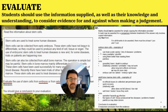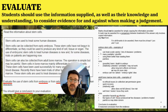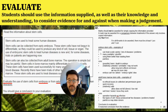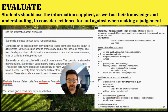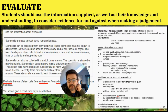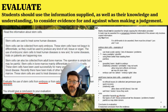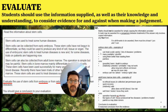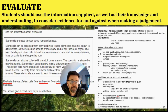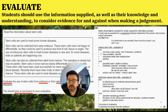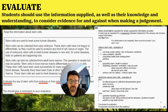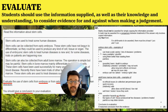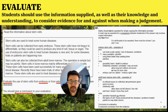For adult bone marrow stem cells: pros include no ethical issues because people can give consent; it's safe, tried and tested, and has been used successfully for many years. Cons: you're going to have an operation which is hazardous due to risk of infection; only a few types of cells are produced, since adult stem cells only produce a certain number of types of cells or tissues; and it would be painful, which may deter donors.